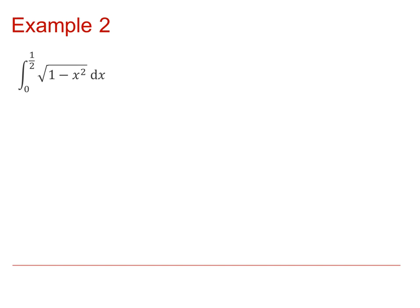In the second example, again we have 1 minus x squared, so the substitution is x equals sin(u), and therefore dx/du equals cos(u). But notice we've got a definite integral, so as well as substituting algebraically, we need to transform the limits, which run from x equals 0 to x equals 1/2. When x equals 0, sin(u) equals 0 so u equals 0. When x equals 1/2, sin(u) equals 1/2, so u equals π/6. Note we are working in radians.